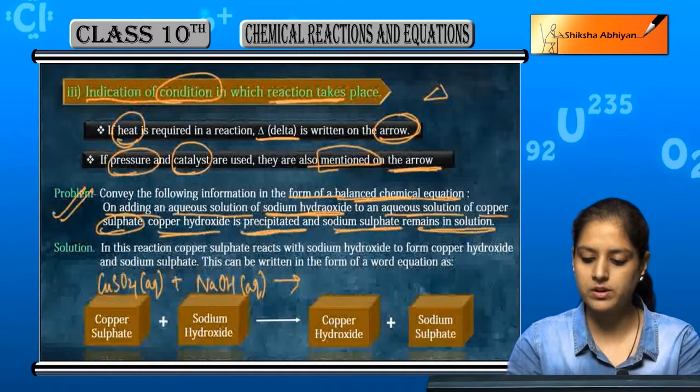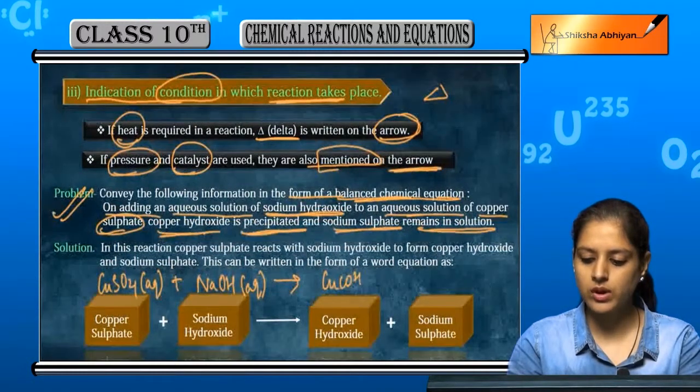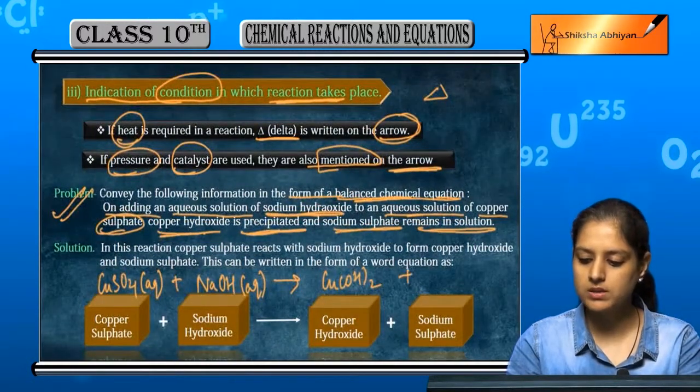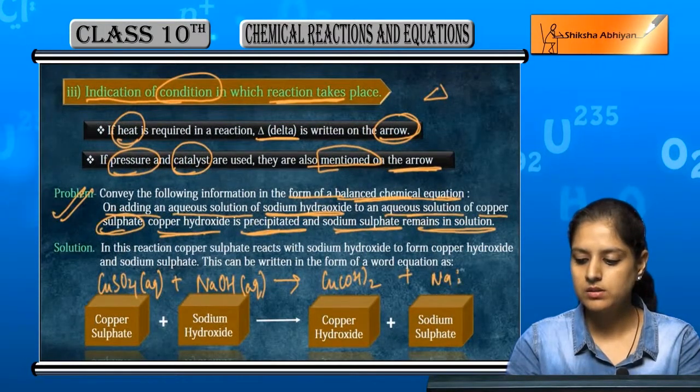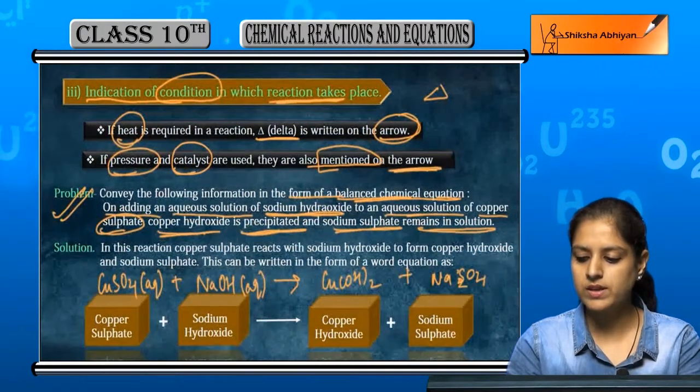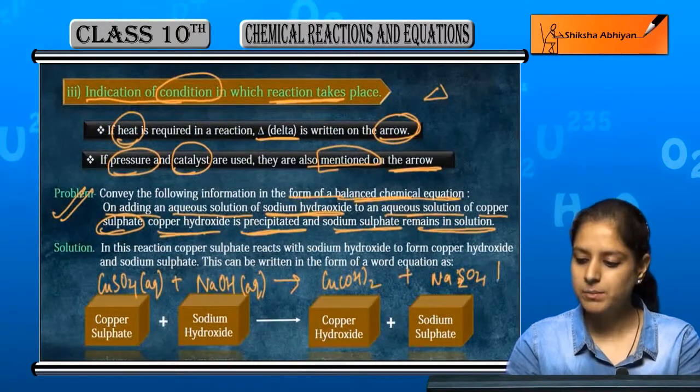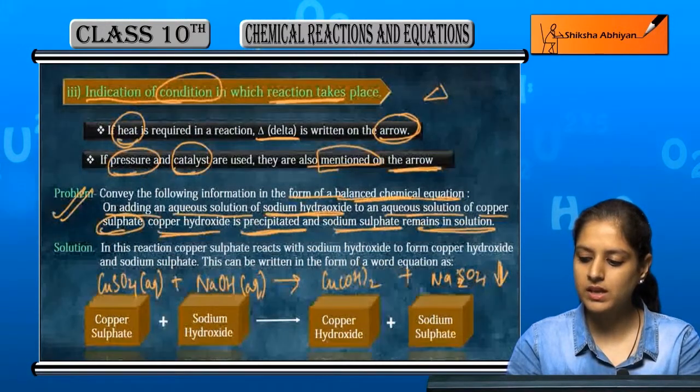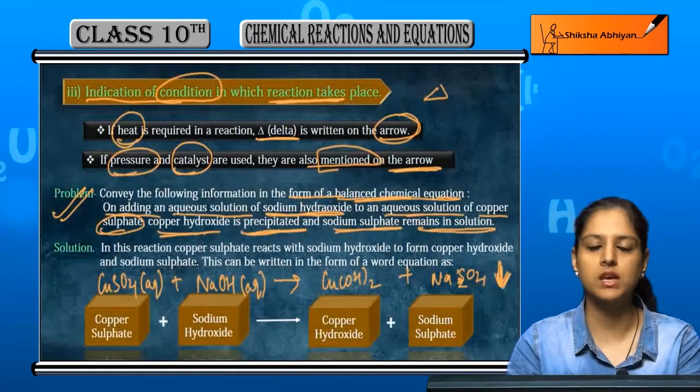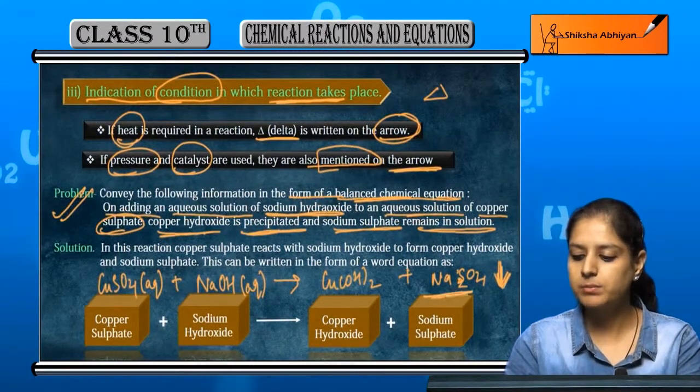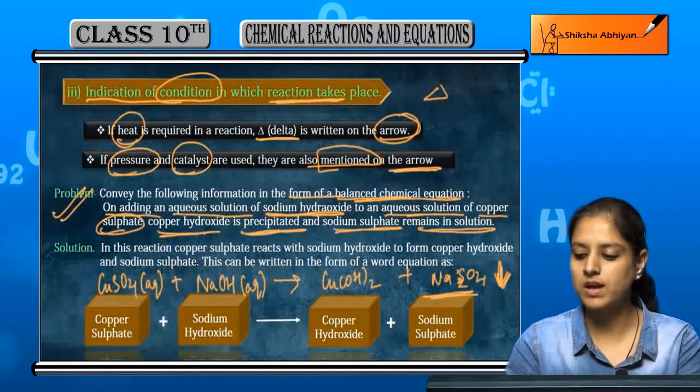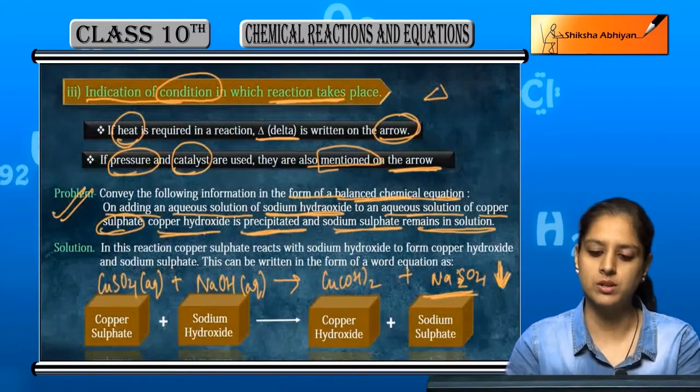Which is copper hydroxide. Copper hydroxide means Cu(OH)2 plus sodium sulfate Na2SO4. So we can see a precipitate, so we show a downward arrow. If something is forming a precipitate, we show a downward arrow.